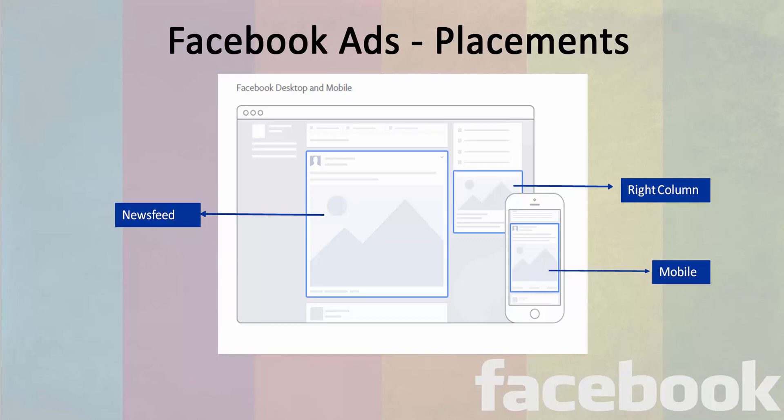For the desktop version, one type of placement that is available is in the newsfeed. Generally, when you are going through the updates that you see coming from your friends in your newsfeed, you also see some content which is called sponsored content. This is the newsfeed ad which is allowed by Facebook. Another type of ad available on the desktop version of Facebook is the right column ad.